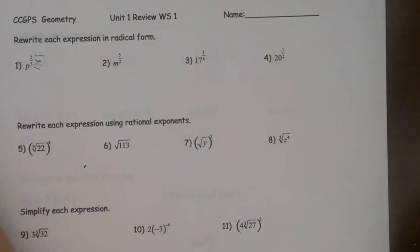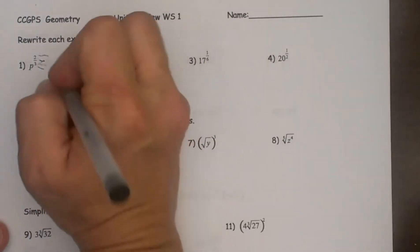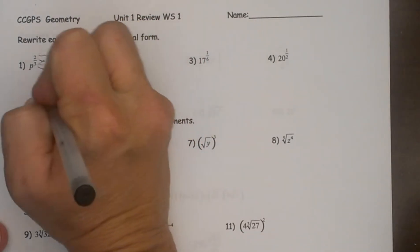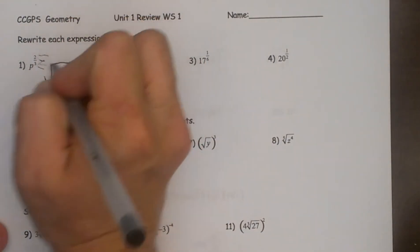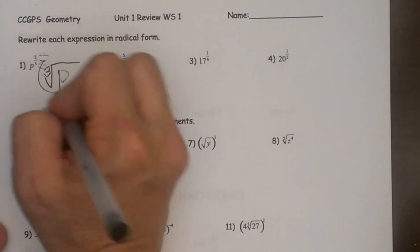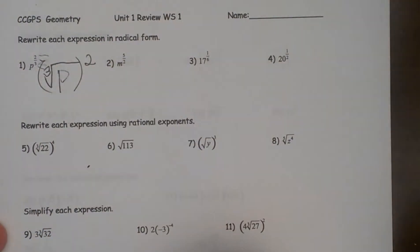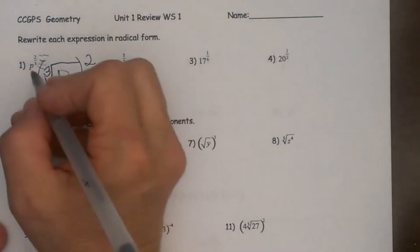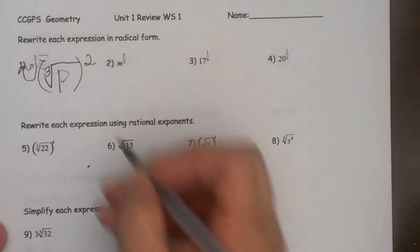So I am going to rewrite this as p and then I am going to write it in a radical and the three is my root so it is a cube root of all this squared. So that is how you write it where the three becomes the root.